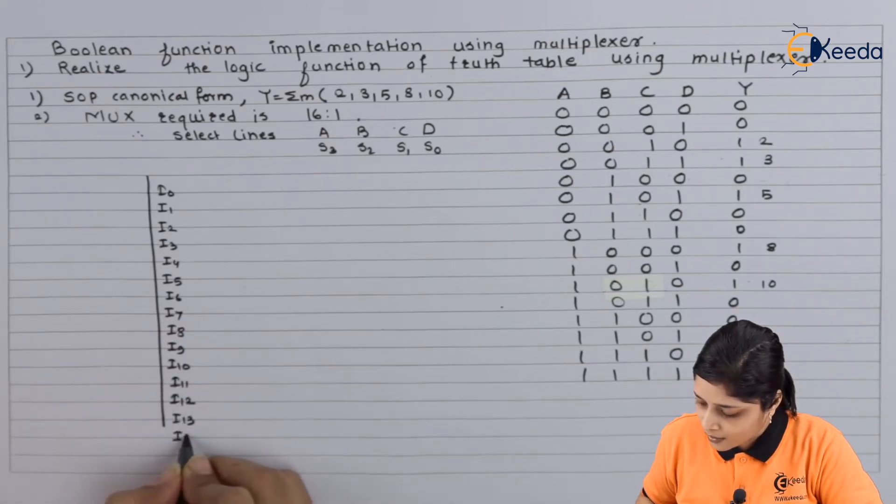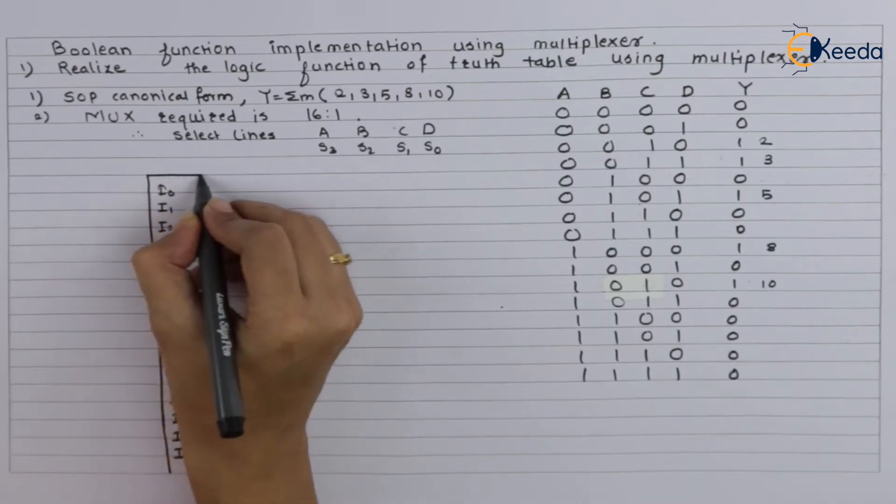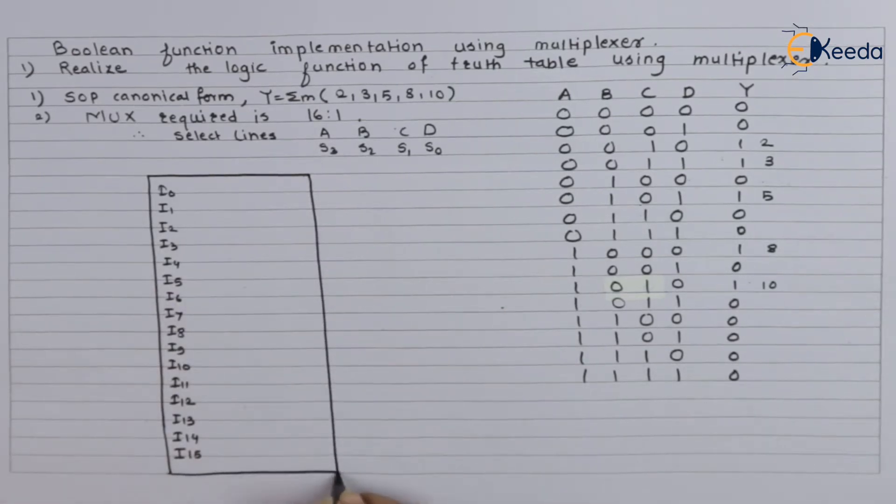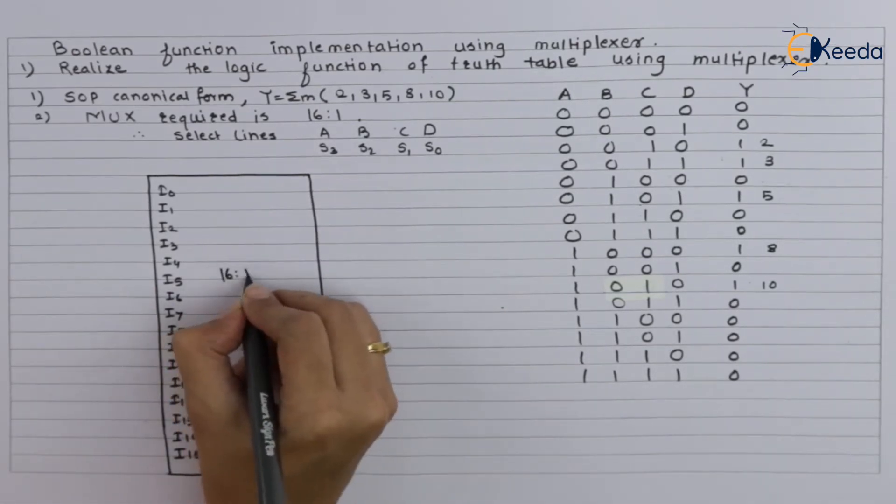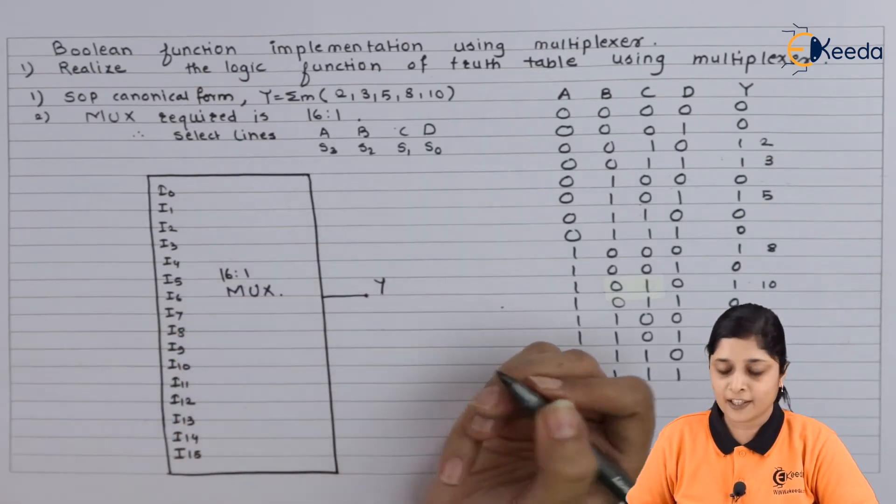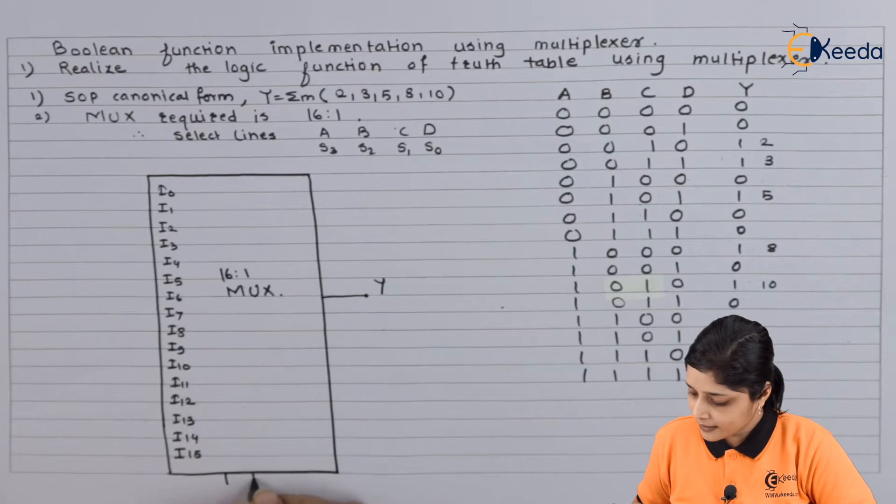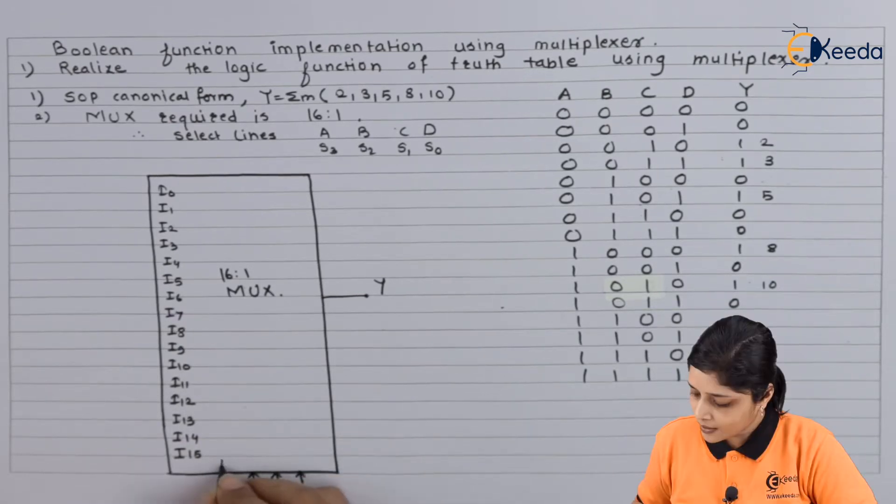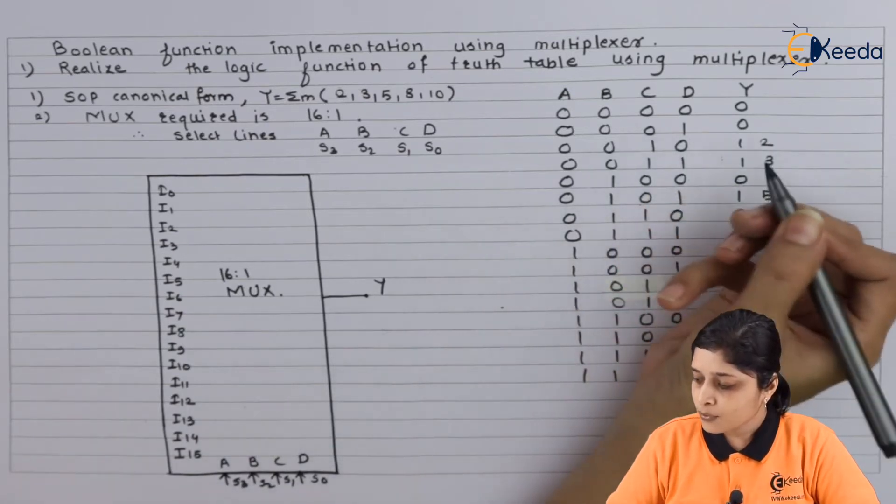I14 and I15. So this is the input side, this is 16 to 1 mux. Output we are going to define as Y, and the select lines are here. Variables are A, B, C, and D; select lines are S0, S1, S2, and S3.